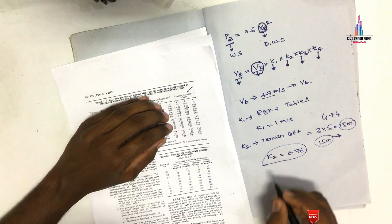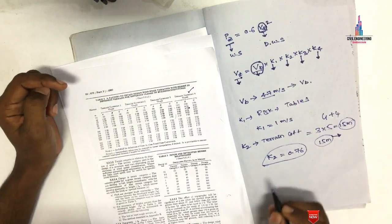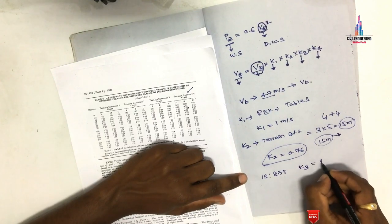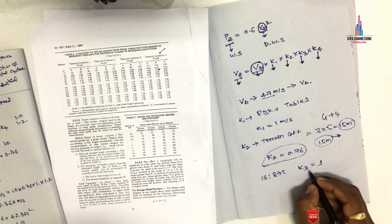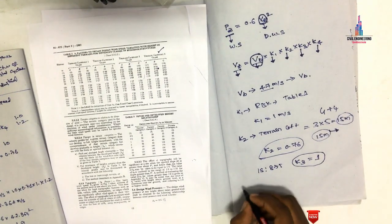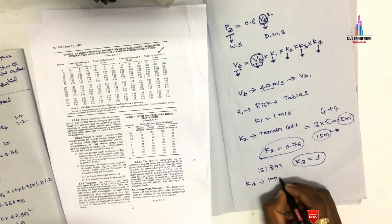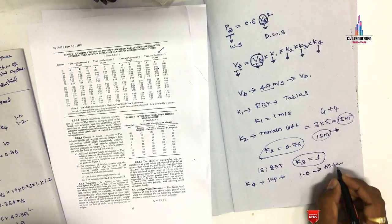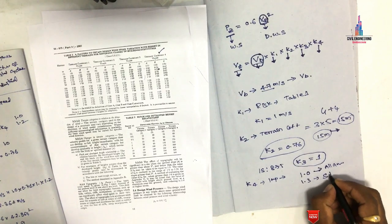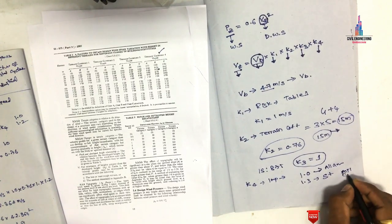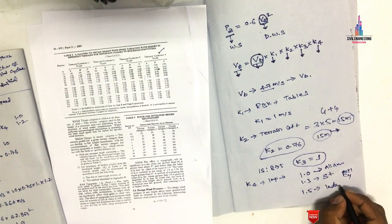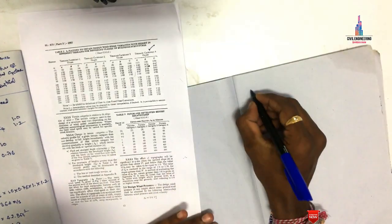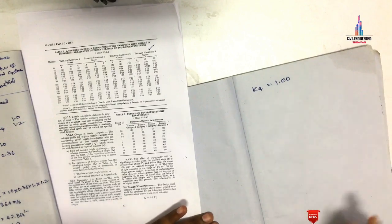Next, K3 is the topographic coefficient factor. As per IS 875 code, we take K3 = 1 for general calculations. Then K4 is the importance factor for design wind speed. As per IS code, K4 = 1 for all general buildings, and K4 = 1.3 for structures in postal cyclone zones and for industrial buildings. For this example, I am taking K4 = 1 for all general buildings.